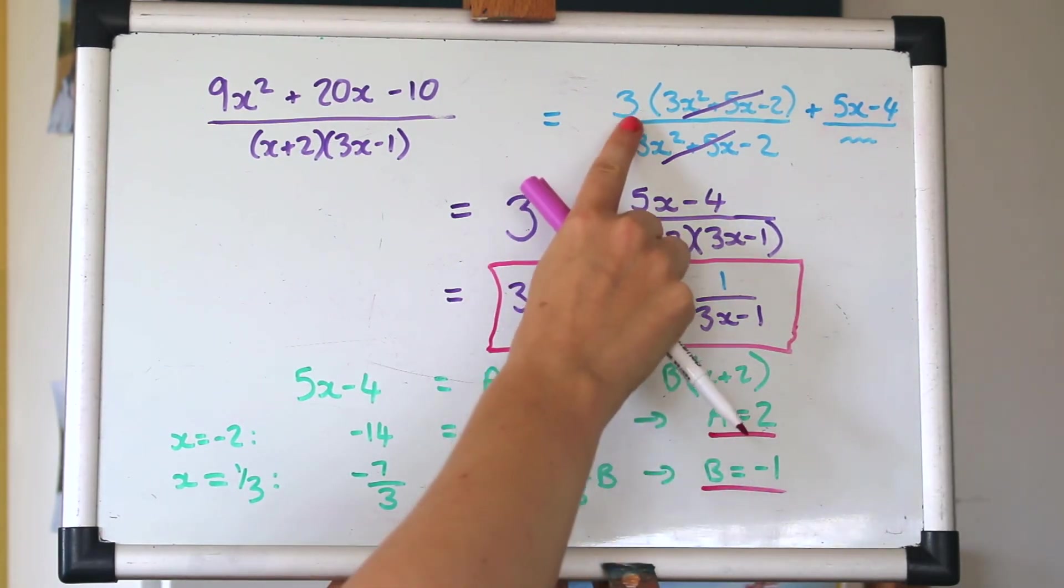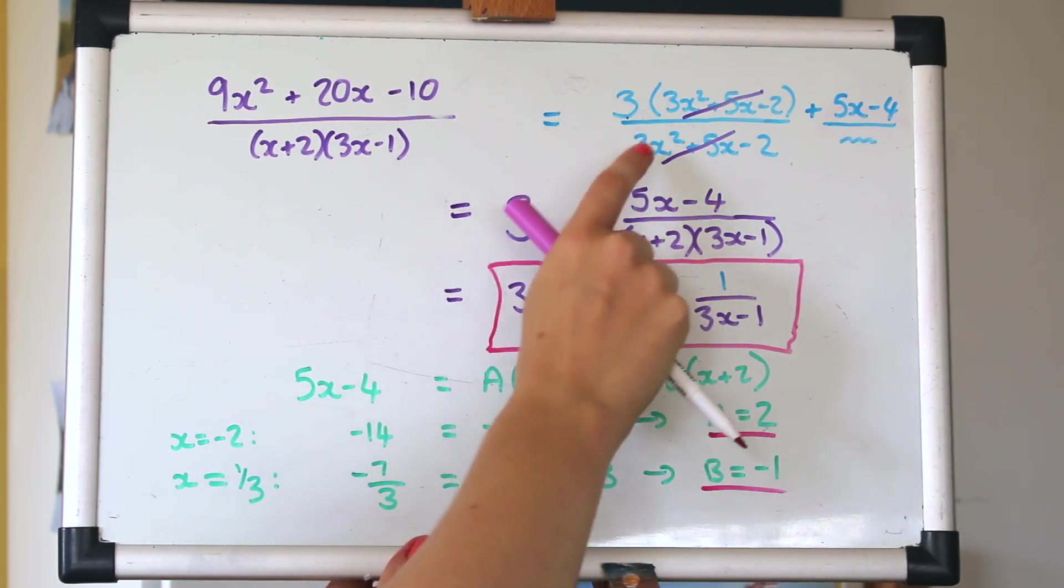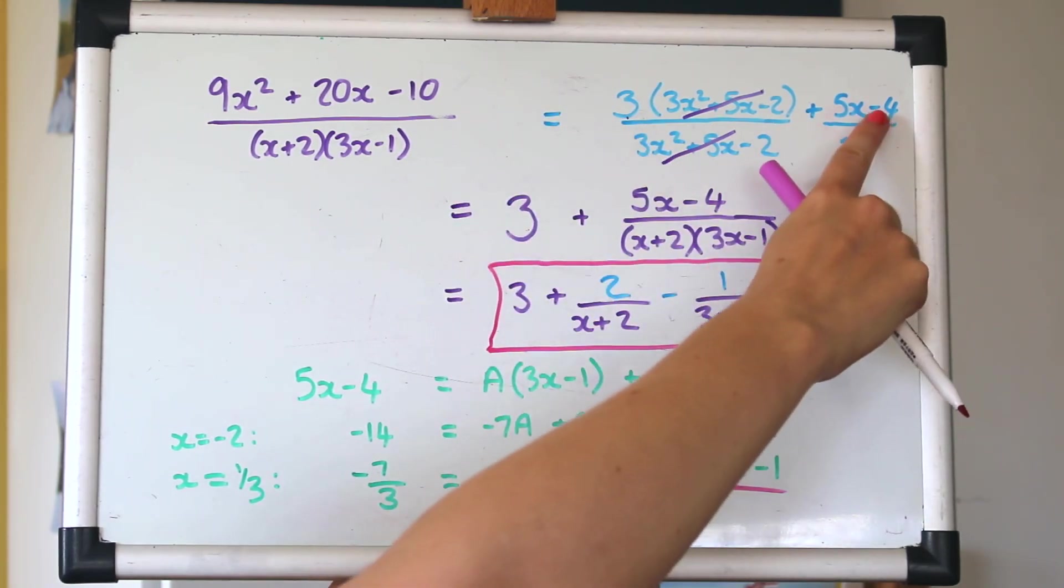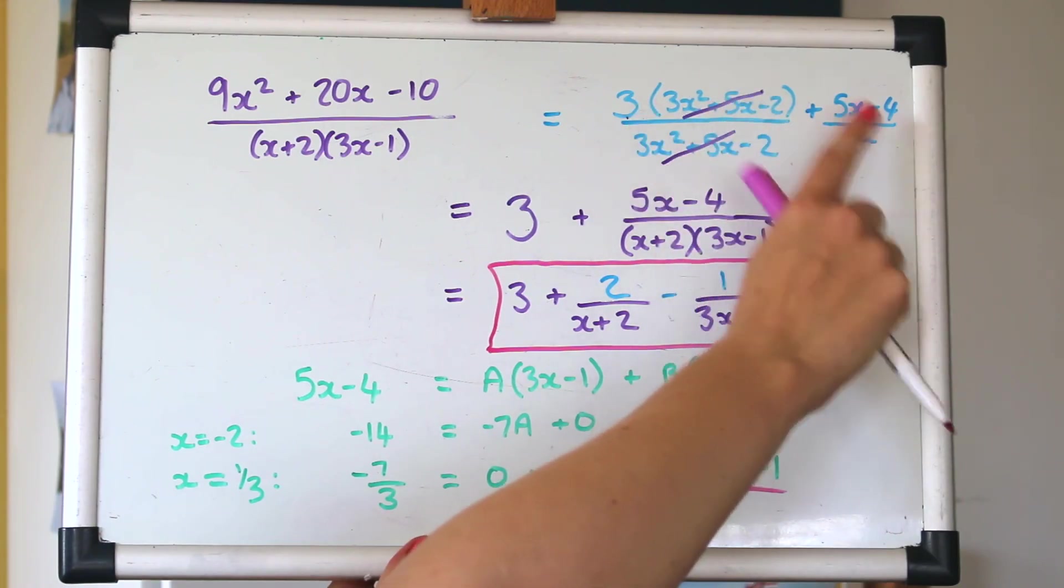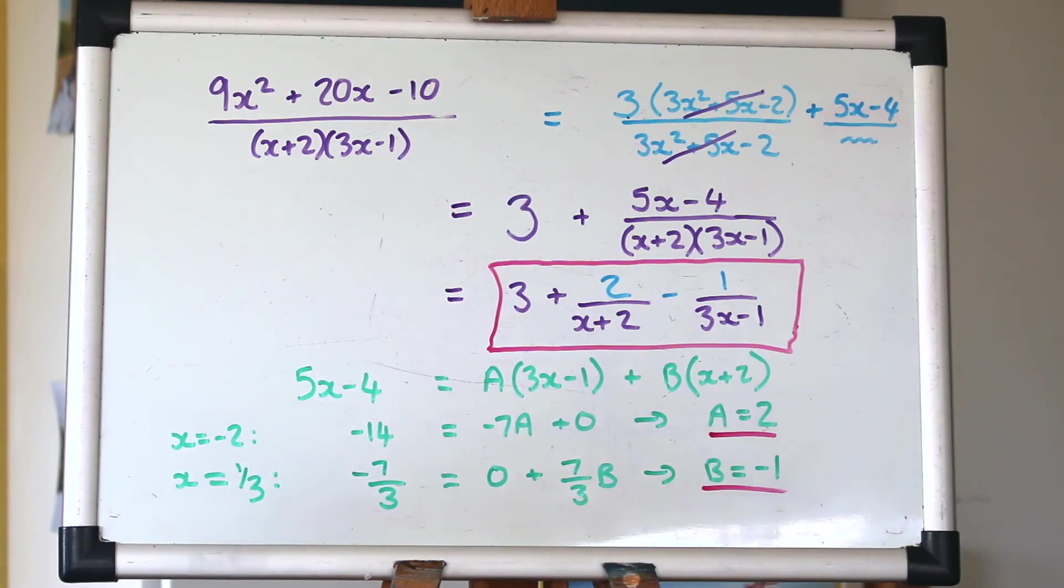So the twist here was having the number at the front. Just to remind you, it was looking at how to make the 9x squared, so the dominant term. So we needed to multiply it by 3. And then we found the other bits by adjusting, by expanding that out and seeing what else we needed. So do keep practicing that. Depending on what exam you're looking at doing, you might get this kind of question, you might not. So just check that out, whether you need to practice that or not.